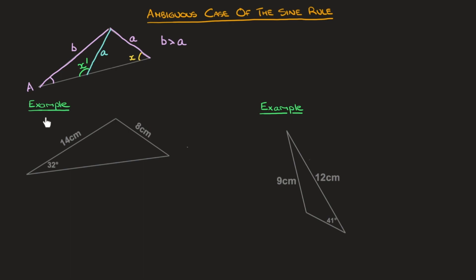In the first example, we need to find the angle x. Relative to x, we have the opposite side length of 14 centimeters, an acute interior angle of 32 degrees, and its opposite side length of 8 centimeters. We don't have the angle between the two side lengths, nor do we know the third side length. Since the side length opposite the angle we're trying to find is the longest of the two, we'll be faced with the ambiguous case of the sine rule.